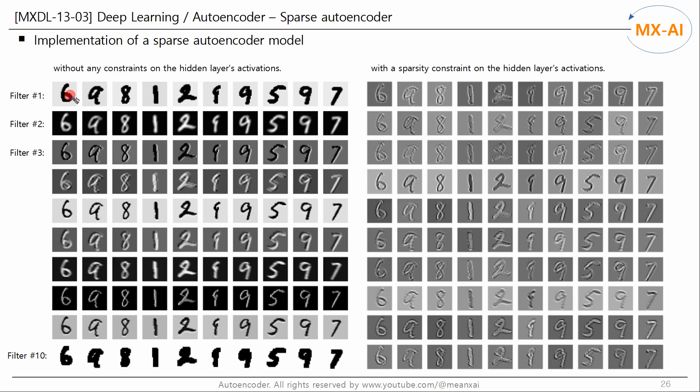Next, let's observe the results of a standard autoencoder without the sparsity constraint. For some filters, edges are detected. But overall, no edges are detected. That is, the pixel values are not sparse.